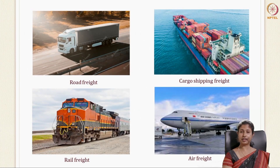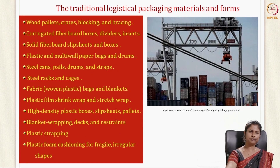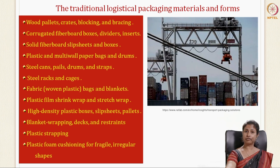These are the modes of transportation usually used for food packages: road freight, cargo shipping freight, rail freight, and air freight. Logistic packaging materials and forms include wooden pallets, crates and blocks, corrugated fiber boards used as transport packaging, solid fiber boards, plastic and multi-wall paper drums and bags, steel cans, pails and drums, and steel racks and cages.